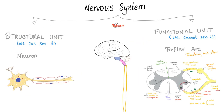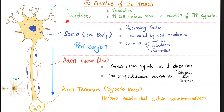What's the structural unit of the central nervous system? Neurons. What's the functional unit? The reflex arc. The neuron has dendrites, a soma, an axon, and an axon terminus.